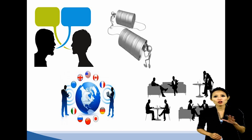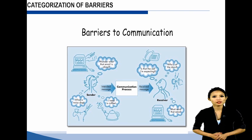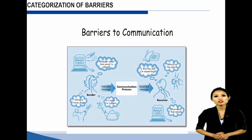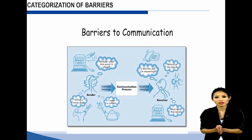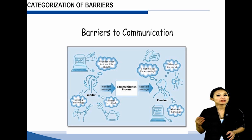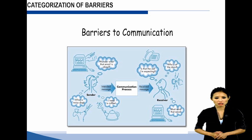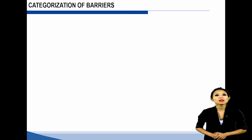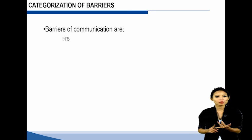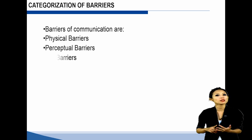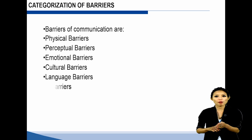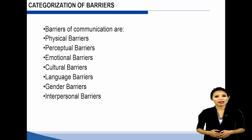We should understand these barriers as they can create hurdles in our professional and personal life. There are several barriers that affect the flow of communication in an organization. These barriers interrupt the flow of communication from the sender to the receiver, thus making communication ineffective. It is essential for managers to overcome these barriers. The main barriers of communication are physical barriers, perceptual barriers, emotional barriers, cultural barriers, language barriers, gender barriers, and interpersonal barriers.